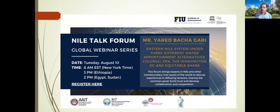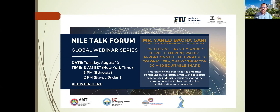Today's talk is about the Eastern Nile system under three different water apportionment alternatives. Yared is going to talk about three different scenarios: the colonial era, which is more or less the status quo; the Washington DC document, which was part of negotiations about a year ago; and the equitable share formula that many have been discussing. Under these different scenarios, what does Eastern Nile water apportionment look like?